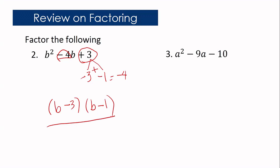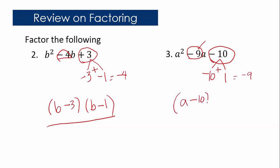Now let us have a squared minus 9a minus 10. In this case, you are going to find factors of negative 10 that when combined will give you negative 9. The correct factors are negative 10 and positive 1, because negative 10 times positive 1 equals negative 10, and if you add them it equals negative 9. So the factors of a squared minus 9a minus 10 are a minus 10 and a plus 1.